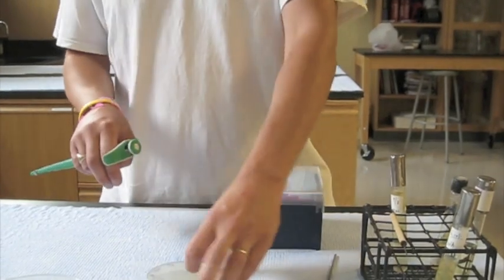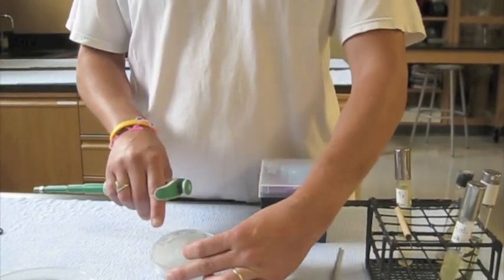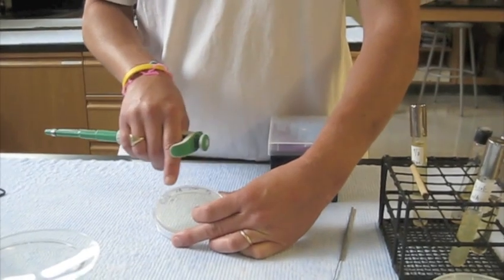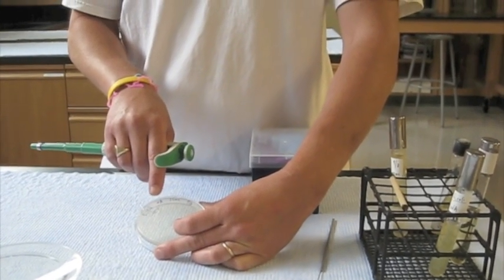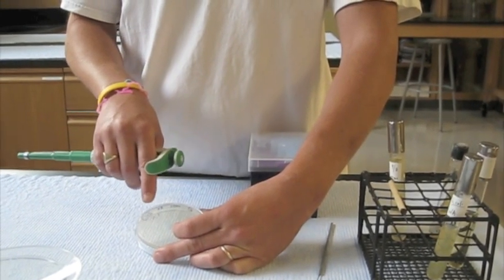I've already labeled my plate with the bacteria that's on there, the media, my initials, the date. And in this case, because I'm going to do a one-tenth dilution, it's labeled 10 to the minus first.